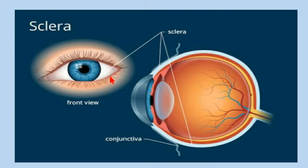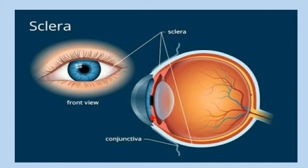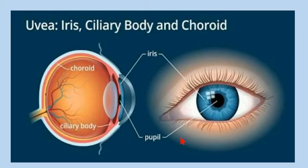Here we can see the sclera in the front view of the eye. The sclera is the white part of the eye. The sclera is surrounded by the conjunctiva — conjunctiva is the outermost layer, next to the sclera. The cornea is a dome-shaped structure found outside the iris and pupil.